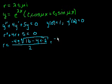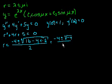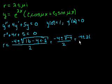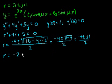This simplifies to minus 4 plus or minus the square root of (16 minus 20). That's the square root of minus 4, all over 2. So we get minus 4 plus or minus 2i, all over 2. Our roots to the characteristic equation are minus 2 plus or minus i.